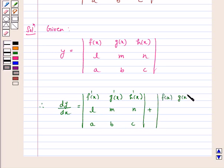...f(x), g(x), h(x), 0, 0, 0 because derivative of the constant is 0, a, b, c.